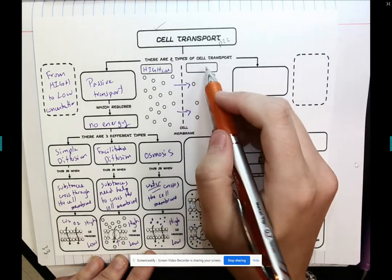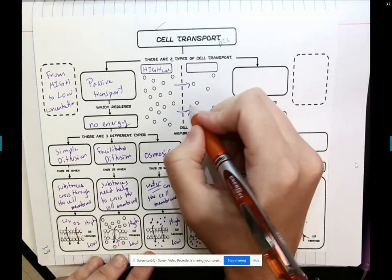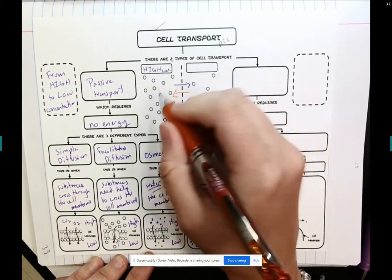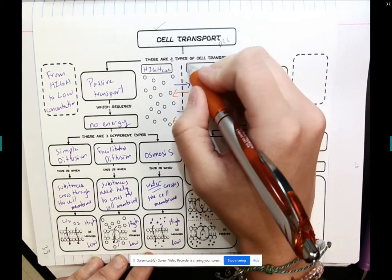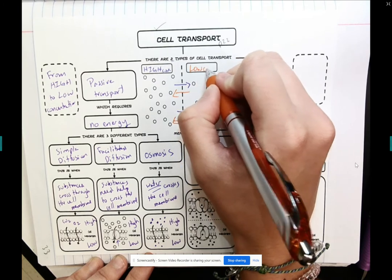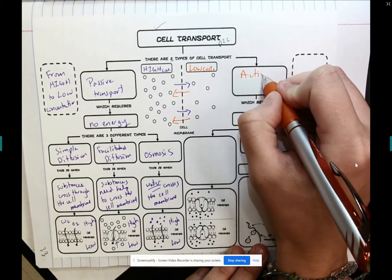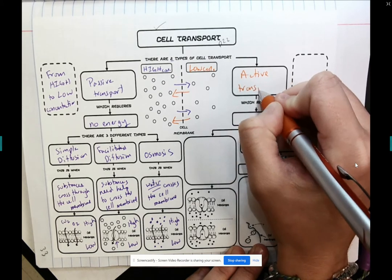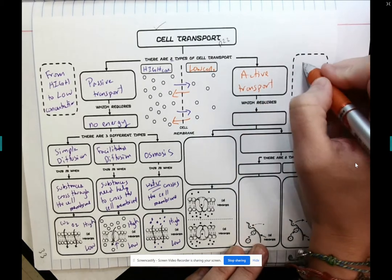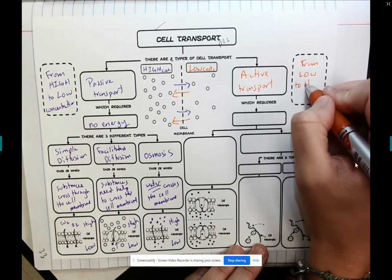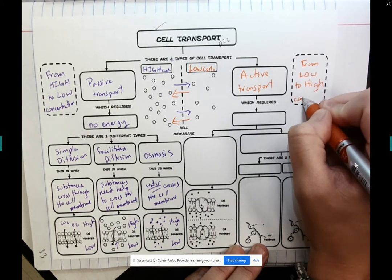On the opposite side, the second type of cell transport is when I'm moving from an area of low concentration to an area of high concentration. This is called active transport. And again, I'm moving from low to high concentration.